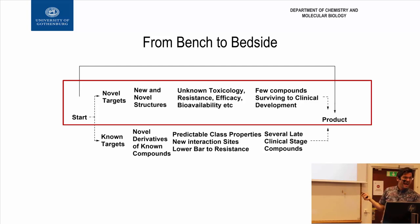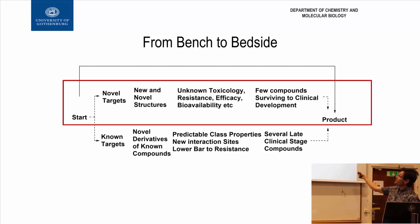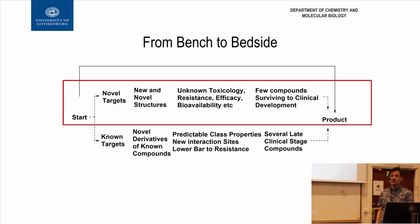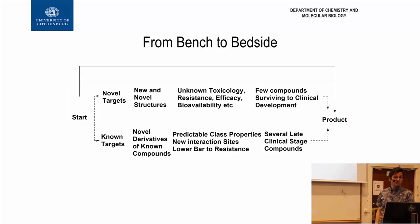Usually the outcome of pursuing novel targets is that we get just a few compounds surviving into clinical development. When we start, we might begin with 10,000 compounds, and when we end up at the clinical stage, we have a handful of compounds — and most of them will probably fail.